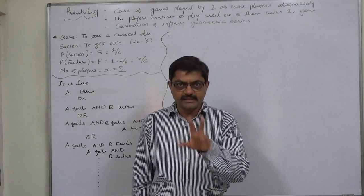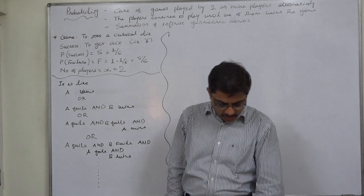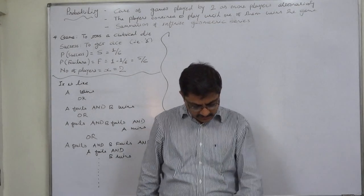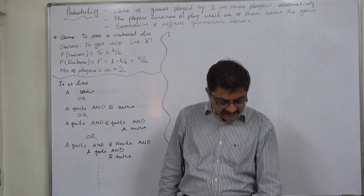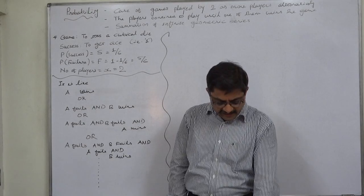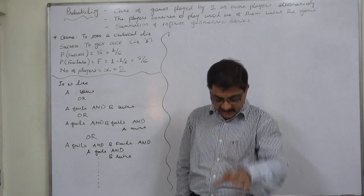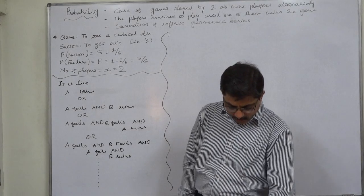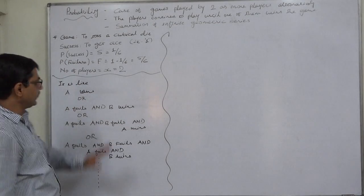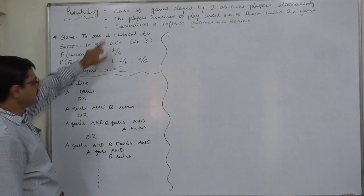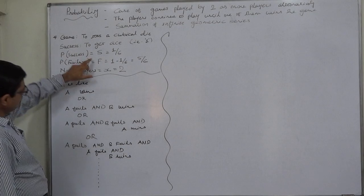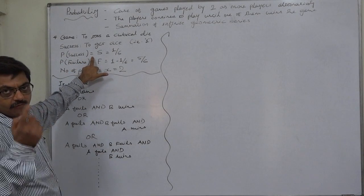Let us take a problem. A and B are two players. A and B toss an ordinary or cubical die alternatively in succession. The winner is the one who throws an ace or number one first. If A is the first to throw — that means A starts the game — calculate their respective probabilities of winning the game. The situation is clear: the game is to toss a cubical die, and the definition of success is to get an ace or number one on the upper side.